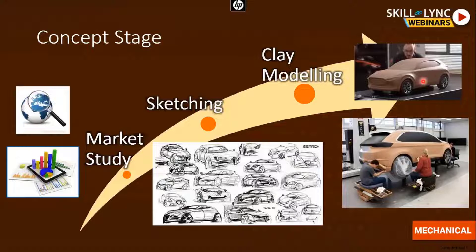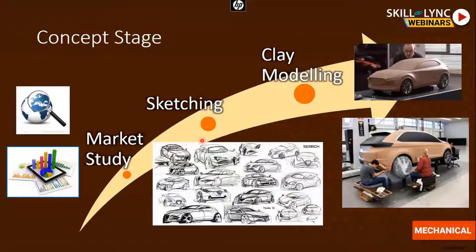First, about the concept stage. The concept stage for an automobile broadly has three different phases. There may be many minor phases in between, but broadly it has three major phases. One is starting with the market study, which is inevitable for any product. The requirements, expectations from the market, profitability, and life of the product are all studied, and this feedback is provided to the styling engineers.